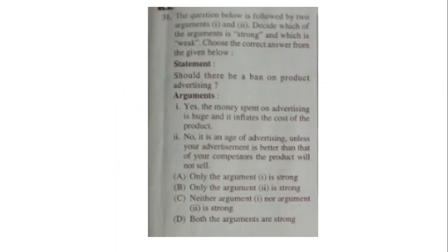Question number 31 of a student that gave the examination. This is the screenshot of his paper. So this was the question that was asked. The question below is followed by two arguments, 1 and 2. Decide which of the argument is strong and which is weak. Choose the correct answer from the given below. The statement was: should there be a ban on product advertising?